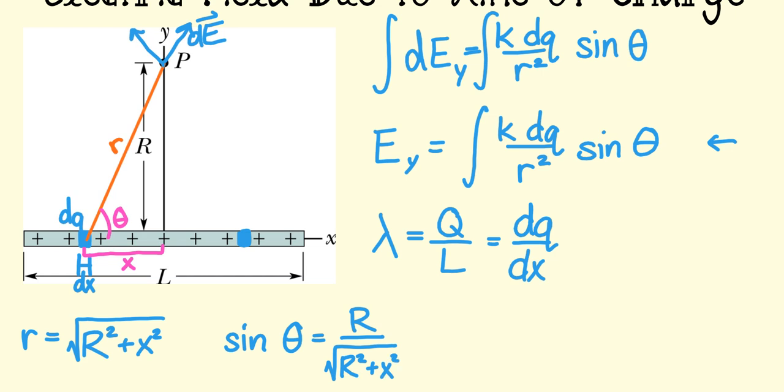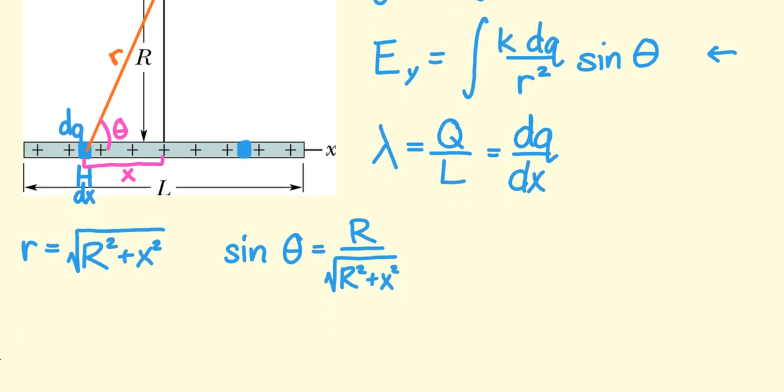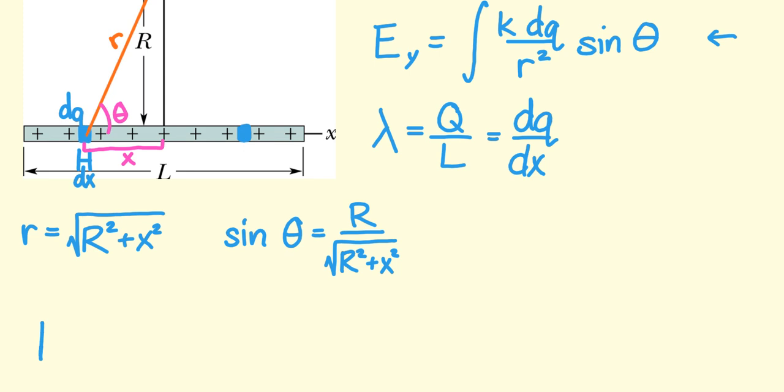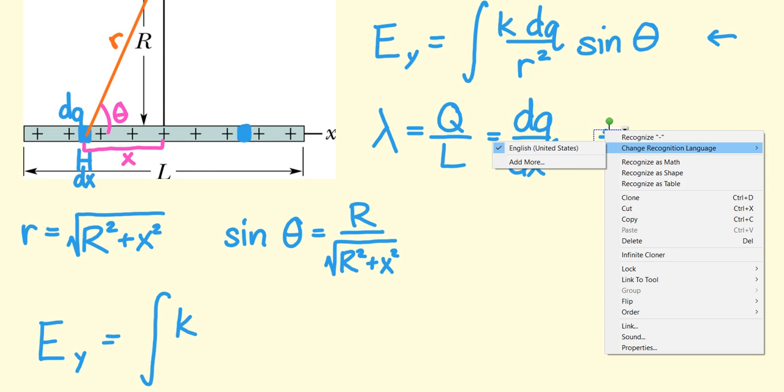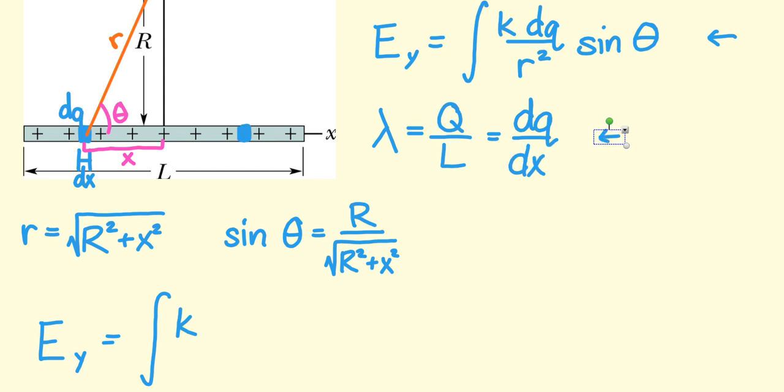When I make these substitutions, I will then be able to take the integral of my expression for the electric field. I'll have E of y is equal to the integral. Now instead of dQ, I'm going to solve this expression here for dQ. We'll say dQ is equal to lambda times dx. And that's what I'm going to plug in here. Lambda dx.